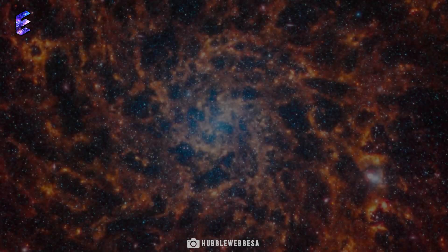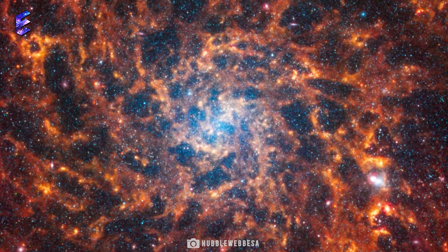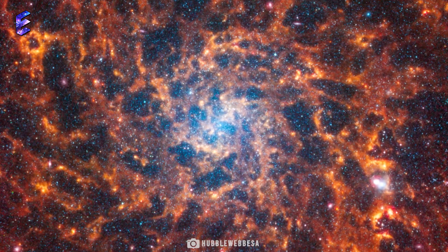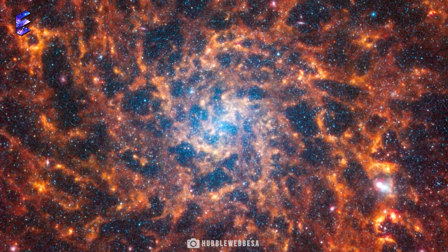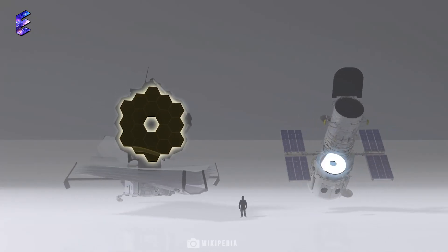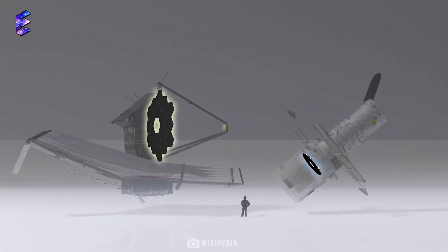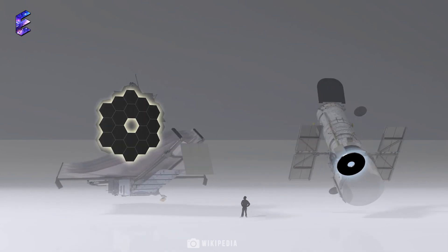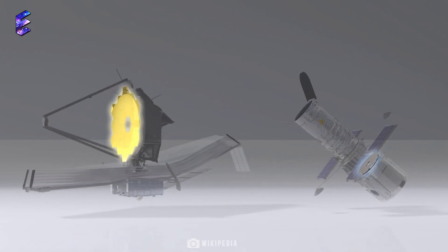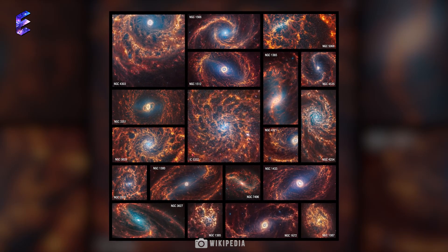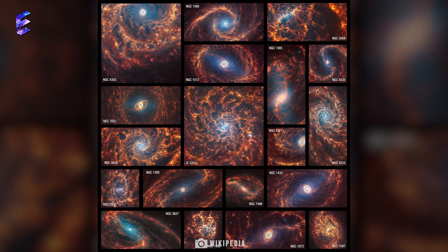The latest picture by Webb shows 19 different spiral galaxies it has captured face-on in incredible detail. Though Webb's size is almost three times that of its predecessor Hubble, it weighs only half as much. So let's find out more about Webb and the extraordinary new picture it clicked.